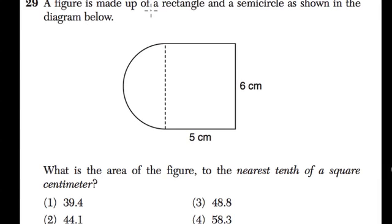Okay, so we're told that a figure is made up of a rectangle and a semicircle, as shown in the diagram below. So here's our rectangle, and here's the semicircle.